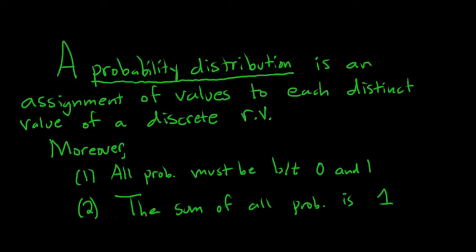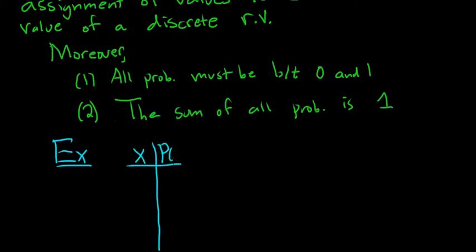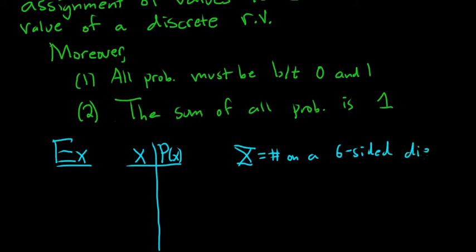Let's look at a simple example of a probability distribution. We have a table with x and p(x). We'll let capital X be equal to the number on a six-sided die, and suppose someone is going to roll a die — capital X will be the number that comes up.